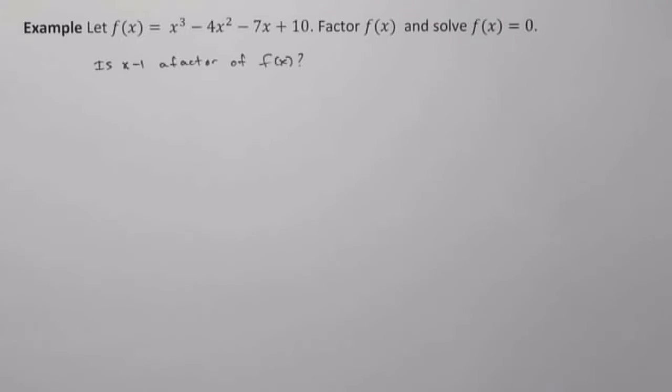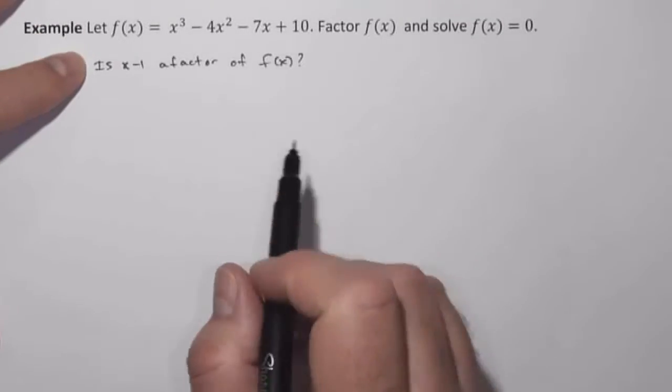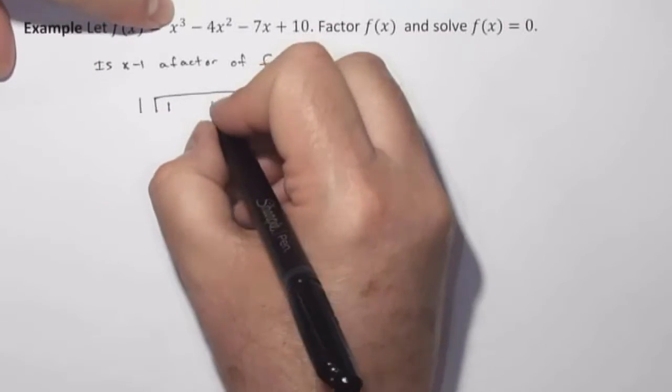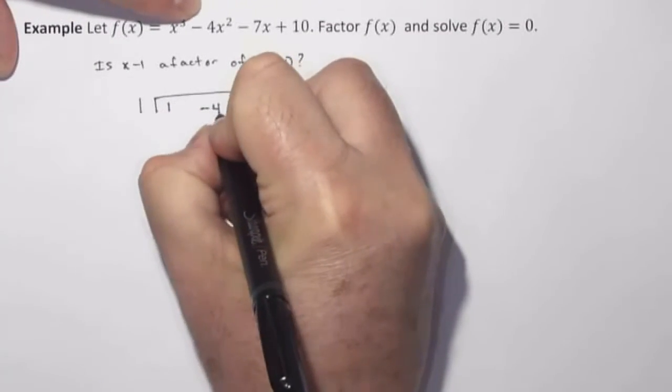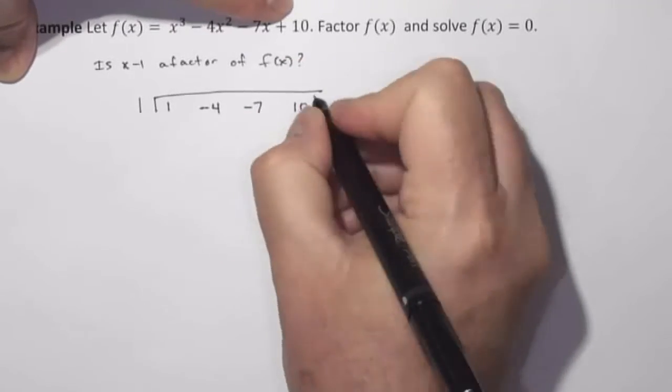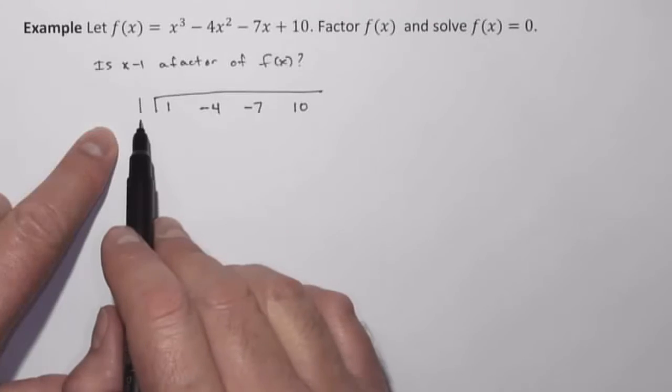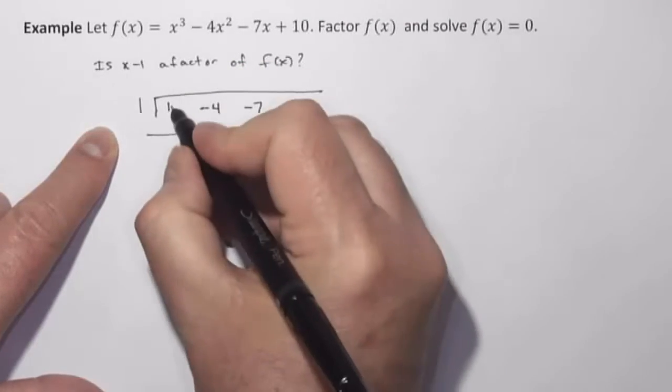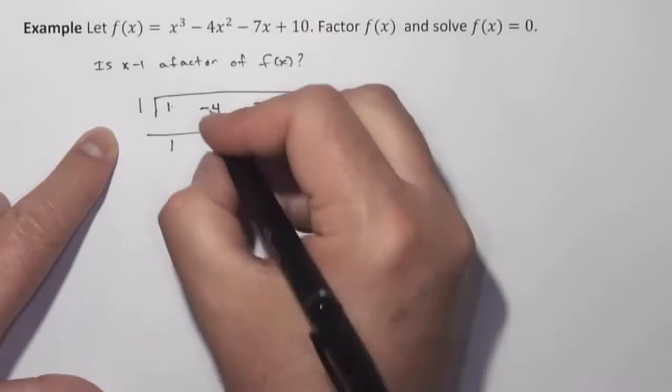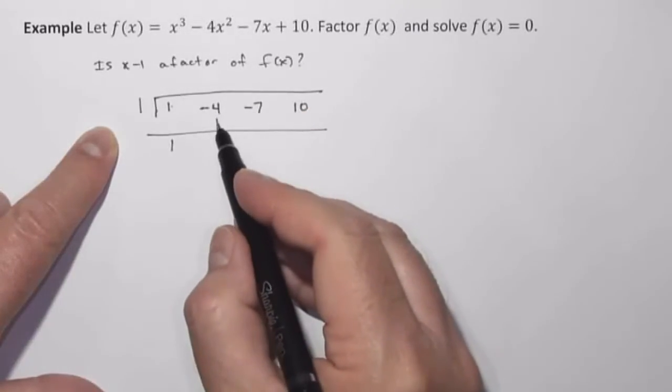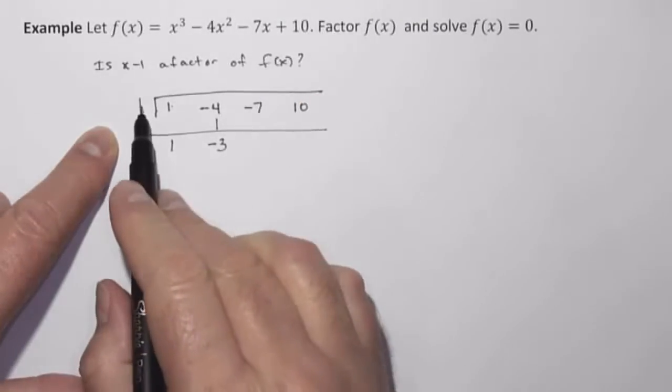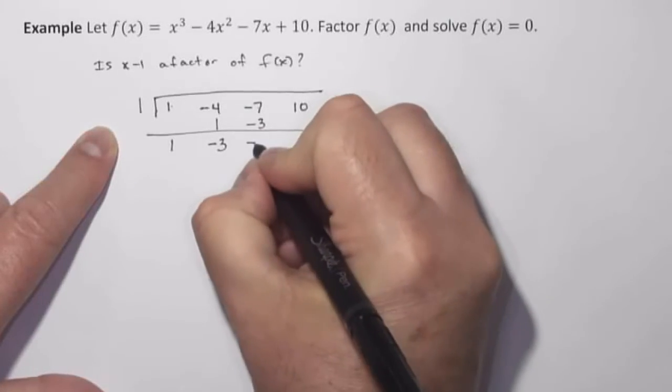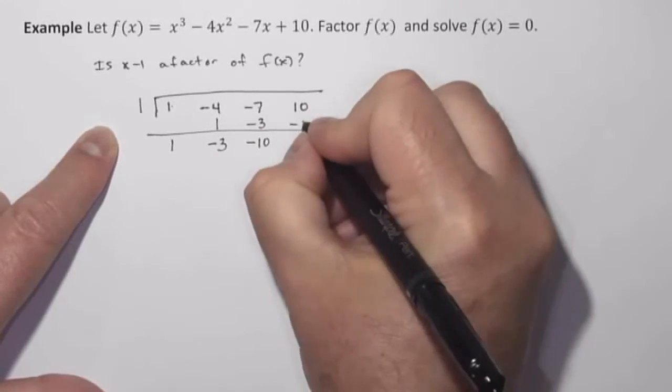Now, if x minus 1 is a factor, then if I use synthetic division, so writing down my coefficients, 1, negative 4, negative 7, and 10. And again, I'm going to see if x minus 1 is a factor, so I'm putting 1 out here in front. Drop down this 1. 1 times 1 is 1. Negative 4 plus 1 is negative 3. 1 times negative 3 is negative 3. Negative 7 plus negative 3 is negative 10. 1 times negative 10 is negative 10.